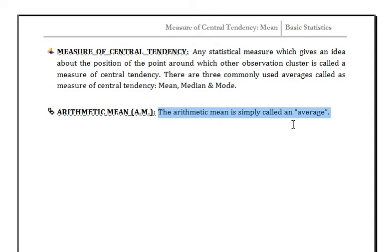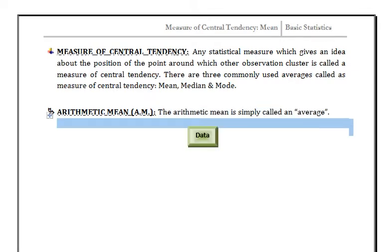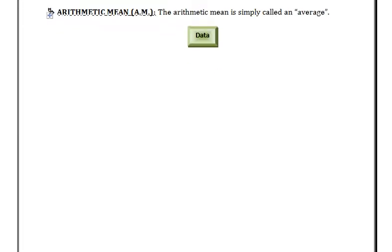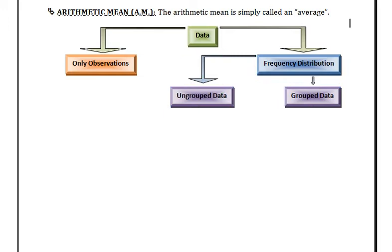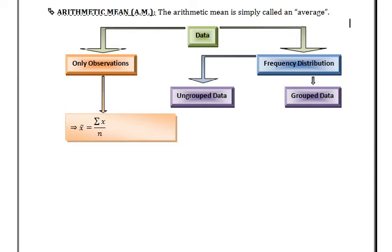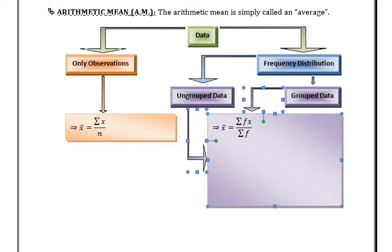Here we discuss arithmetic mean, which is simply called an average. We have two types of data: only observation and frequency distribution. In frequency distribution we have ungrouped data and grouped data. For only observation, mean is summation x upon n, where summation x means addition of all observations and n means total number of observations. For frequency distribution, mean equals summation fx upon summation f.